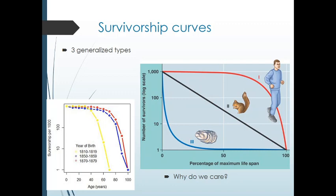So what I want to first talk about is survivorship curves. What a survivorship curve is showing is basically what percentage of the population is alive at any one time. Let's look at a survivorship curve of type 1. Notice that this is a logarithmic scale, so from 0 to 10 is the same distance as 10 to 100 and 100 to 1000. But you can basically think of this as from 0% up to 100%.